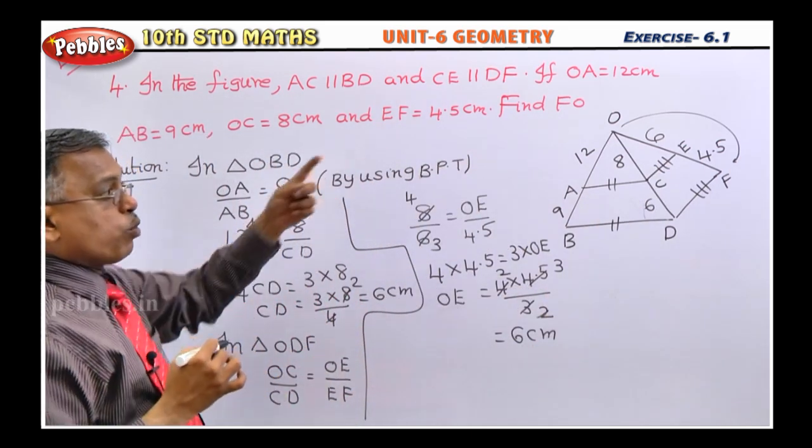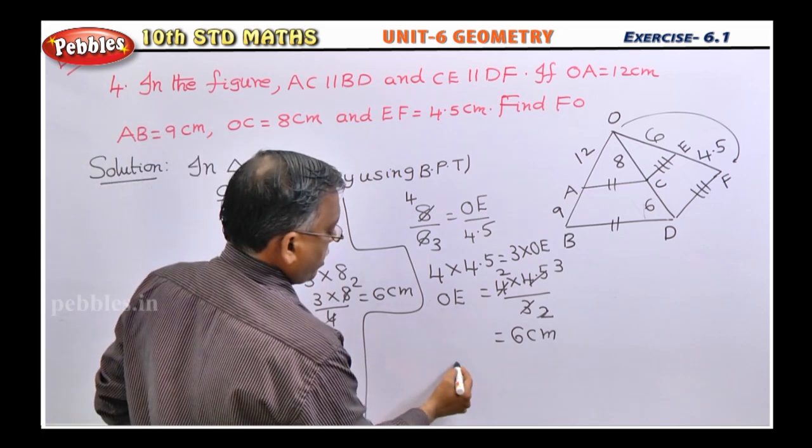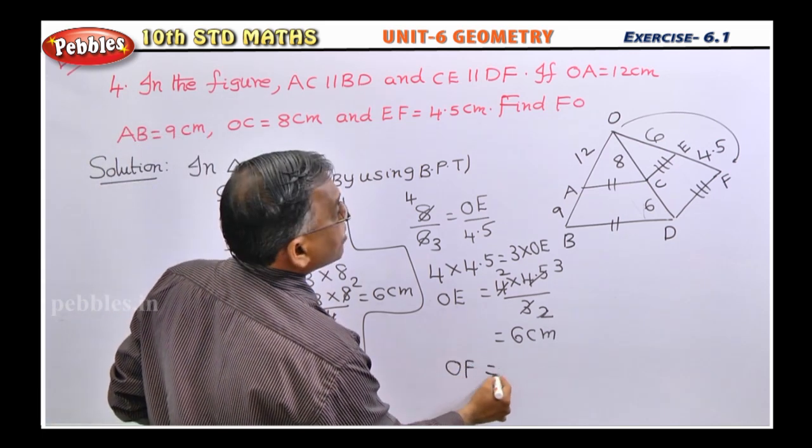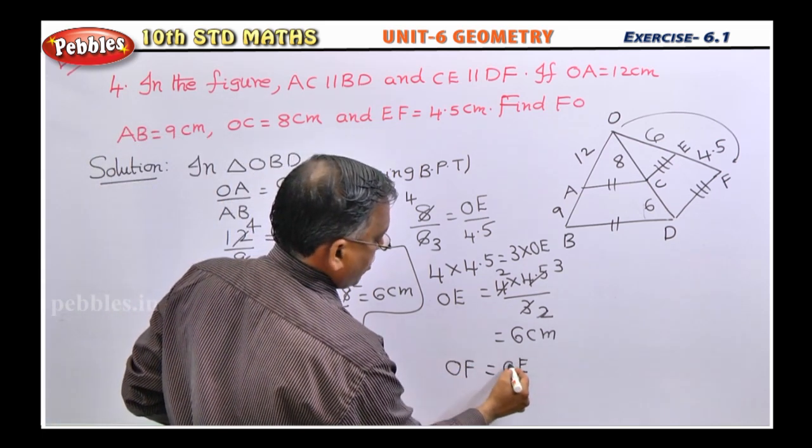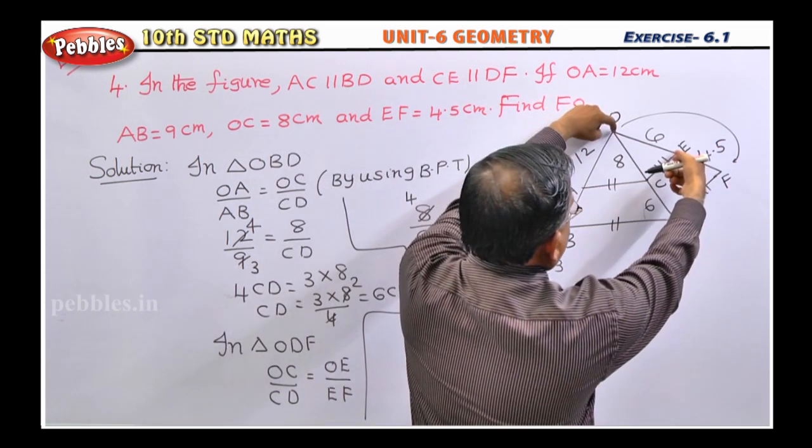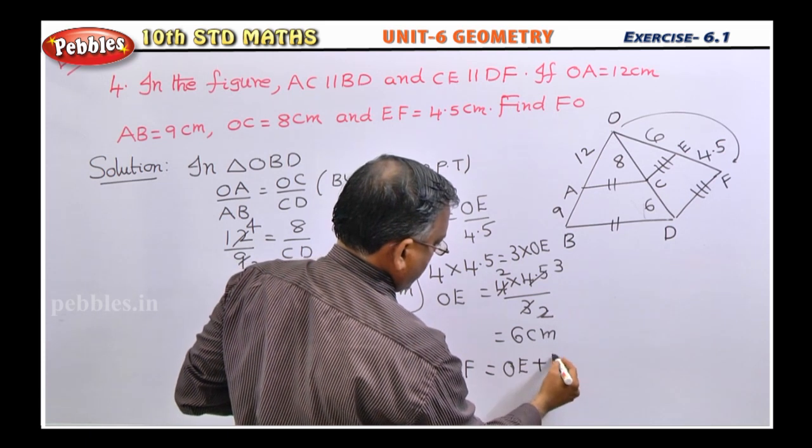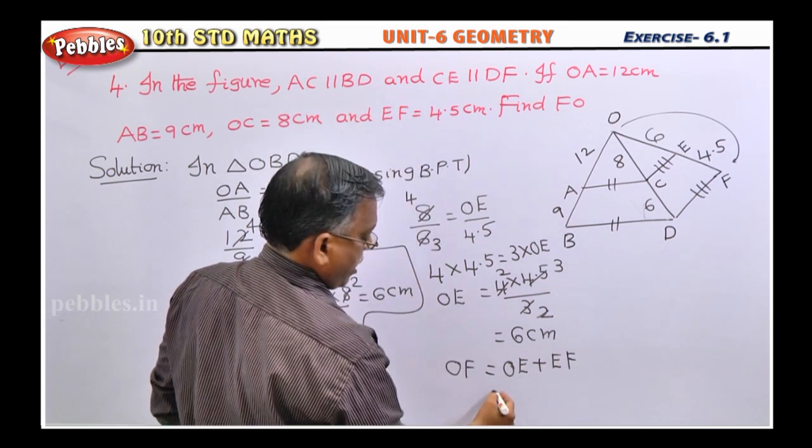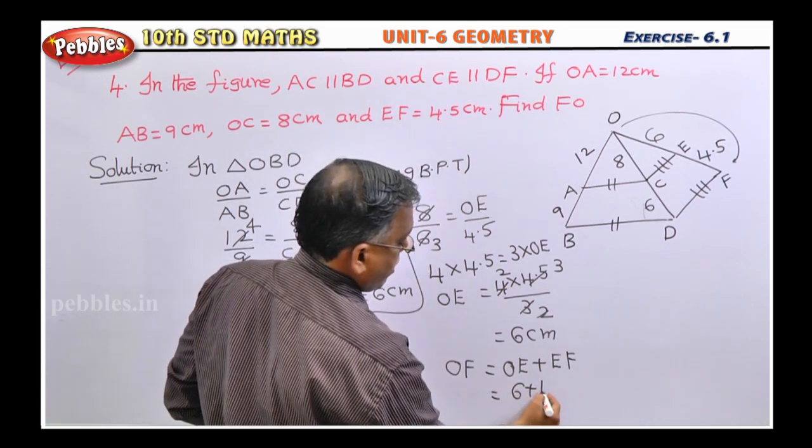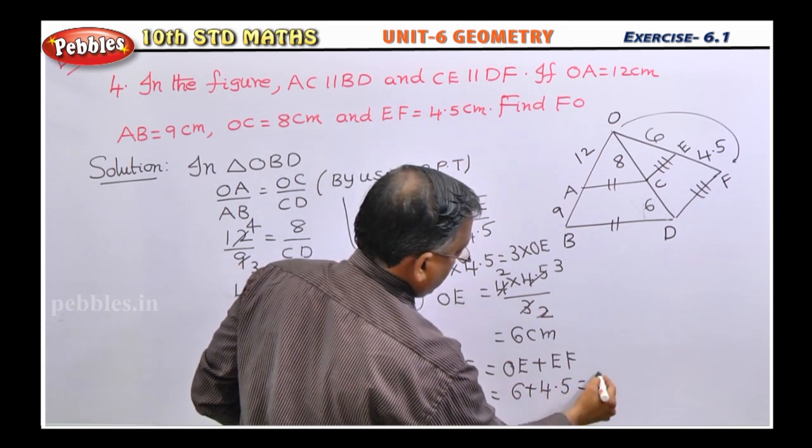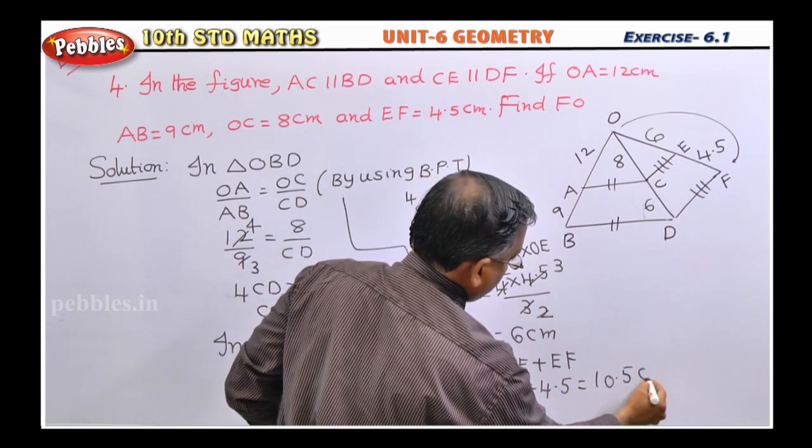Students, what they ask? OF. So, what is OF? OF is nothing but OE, that means this length plus EF. What is OE? 6. What is EF? 4.5. Nothing but 10.5 centimeter.